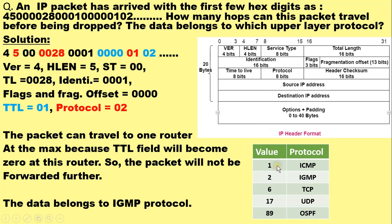If the protocol field value is 1, the data is coming from ICMP. If the value is 2, the data belongs to IGMP (Internet Group Management Protocol). If the value is 6, the data is from TCP. If the value is 17, the data belongs to UDP. If the value is 89, the data is from the OSPF protocol. Here the protocol field has value 02, so the data is coming from the IGMP protocol — this answers the first question.